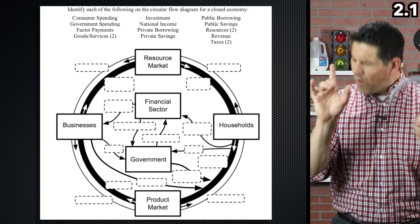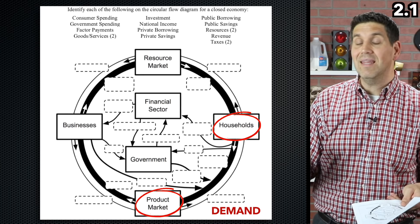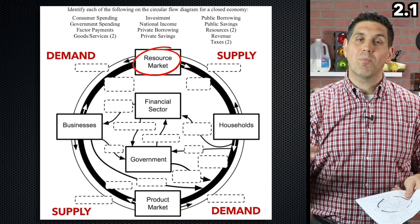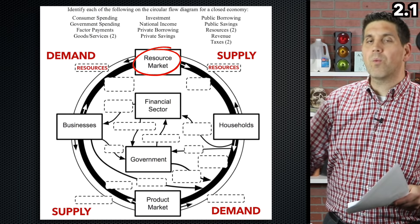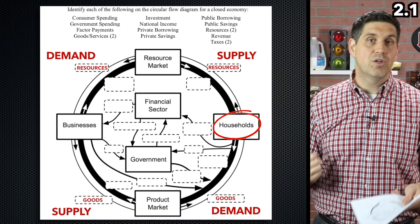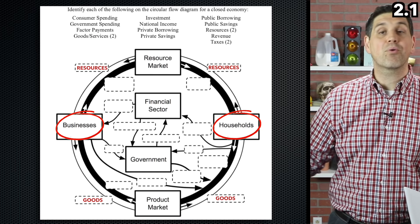The one thing you've got to remember in the circular flow: households both demand and supply. They demand in the product market but supply in the resource market. Businesses supply and demand too — they supply in the product market but demand in the resource market. Your teacher might use the term factor market instead of resource market, because of factors of production — it's all the same. On the top, we're looking at the factors of production: land, labor, and capital, owned by individuals and sold to businesses. The businesses then convert those resources into goods and services and sell them to households.